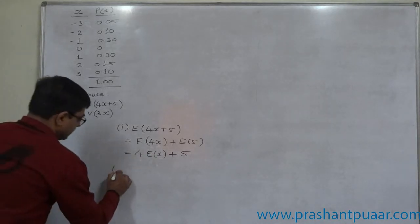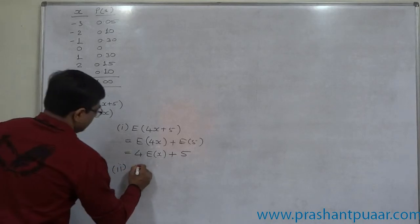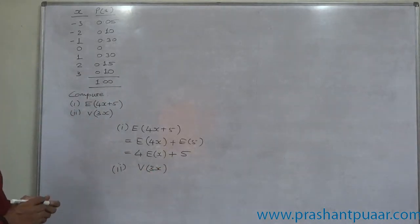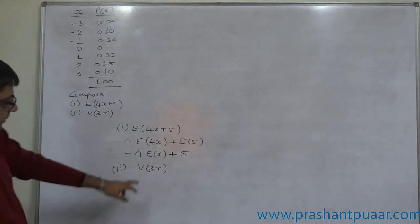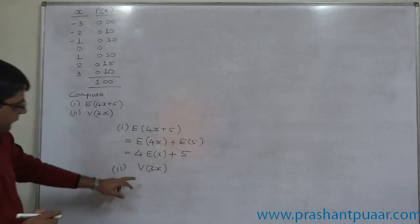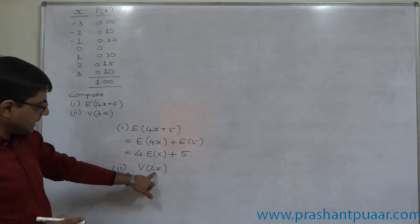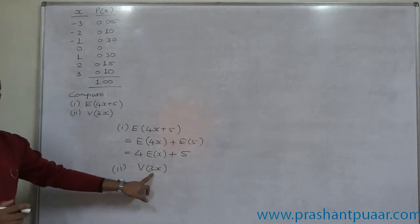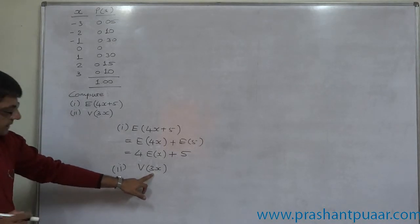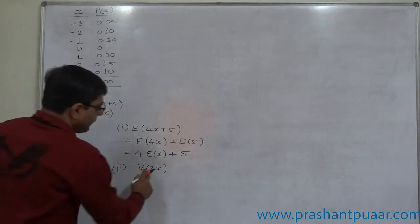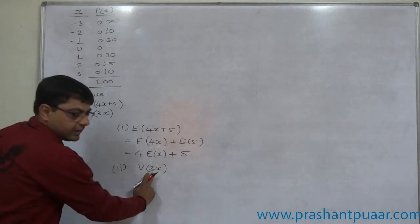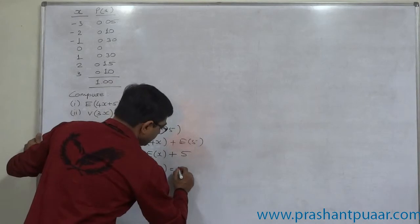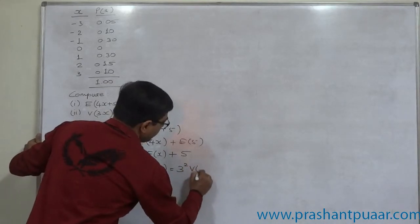Now the second case. Variance of 3x. The property of variance is, if the original values of the random variable are multiplied by any constant value, the result will be squared number times the constant value. So V of 3x comes to 3 square into V of x.